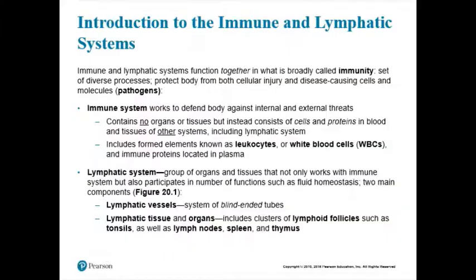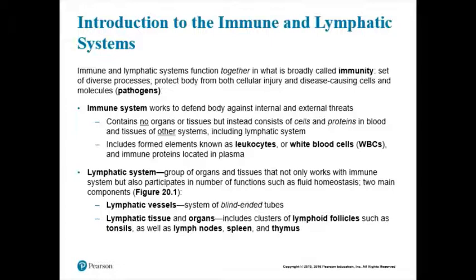You already know some things about this organ system from AMP1. You might remember at least one organ in this system — things like the spleen, your lymph nodes, or your lymphatic vessels. These are organs in the lymphatic system. One basic function of the lymphatic system is to provide immune protection, meaning to fight infections and prevent diseases. That's why it's sometimes referred to as the immune system.